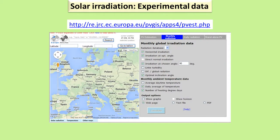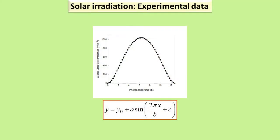Real data of solar irradiation were taken from a European database for different months and cities in Europe, and we fit experimental data to different kinds of mathematical equations. Here you can see an example from Madrid in 2014. Finally, we chose the sine function because it provides a very good fit of the data.